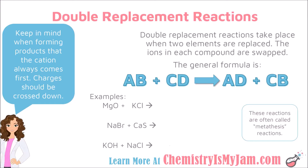We are going to use this general formula to predict the products for some reactions. Keep in mind, anytime you form new products, you should always put the cation first, followed by the anion. You should cross down your charges to make sure that your subscripts are correct. And finally, you should always make sure that the reaction is balanced using coefficients.